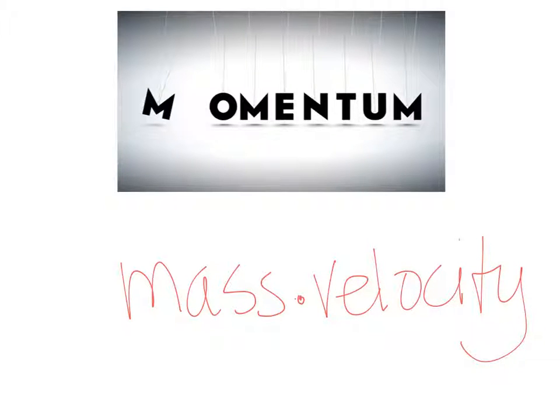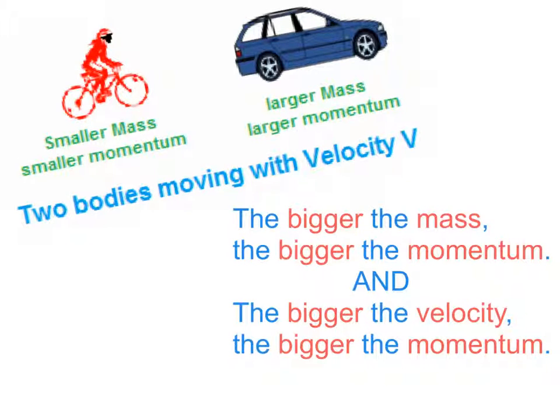So momentum is equal to the mass times the velocity. If we have two objects that are moving with the same velocity, the object with a smaller mass is going to have a smaller momentum. An object with a larger mass is going to have a larger momentum. Again, that's if we have two objects that are moving with the same velocity.